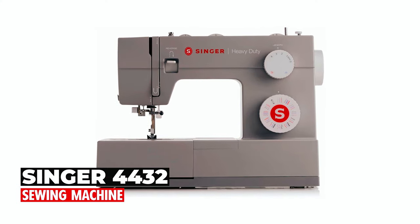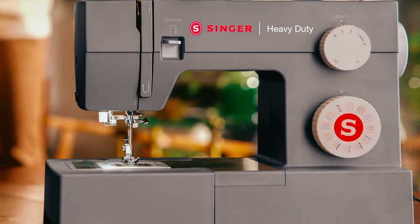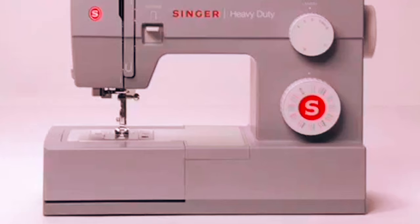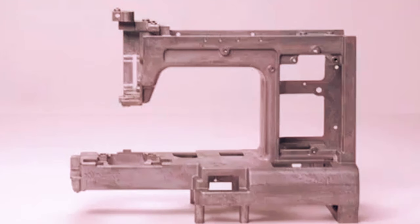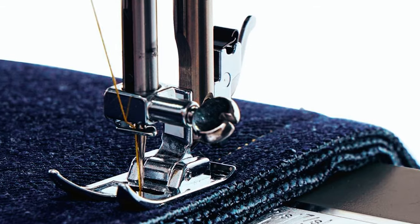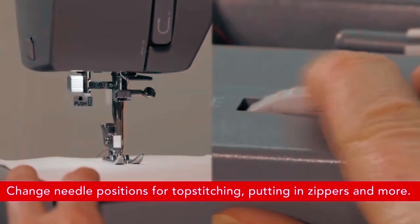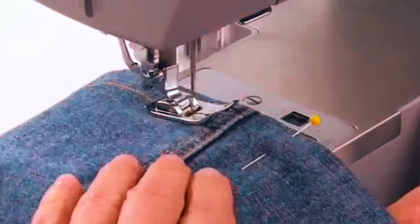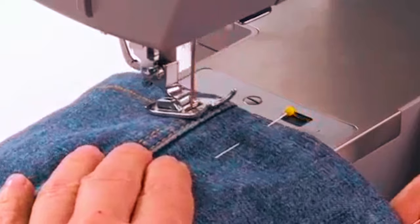Singer 4432 Sewing Machine. At number 3, we present the Singer 4432 Sewing Machine. This heavy-duty sewing machine is made of a frame with a metal interior that provides stability and longevity. It also includes a variety of useful accessories such as an all-purpose foot, zipper foot, buttonhole foot, extra presser foot, screwdriver, quilting guide, and lint brush as well as bobbins, needles, and a spool pin felt.